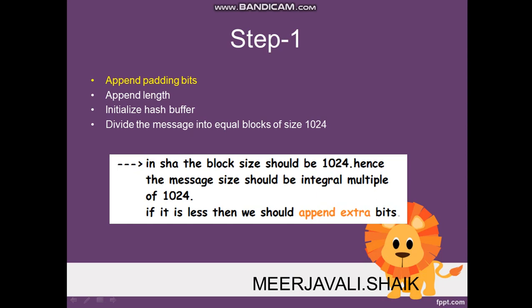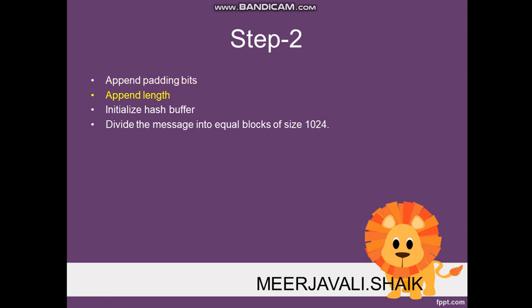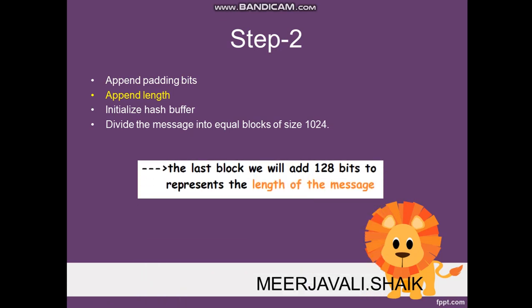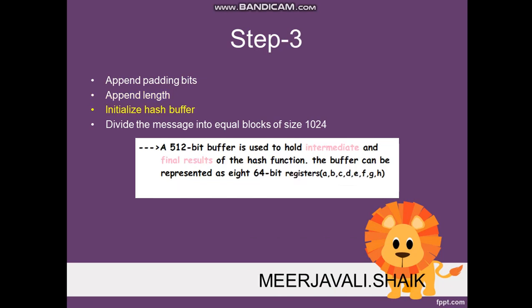Step two is called 'append length.' Because the message length is variable and not fixed, we add the length of the message to the last block. 128 bits are used to represent the length of the message. That completes step two.